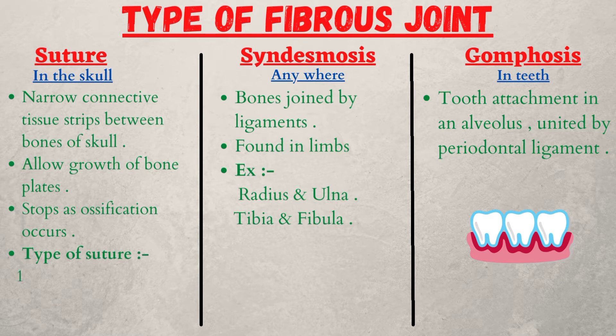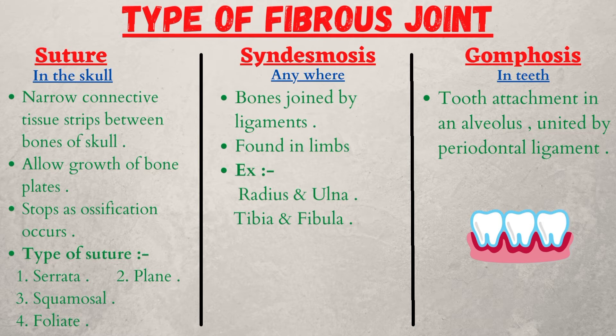Types of suture: one, serrata; two, plane; three, squimosal; four, foliate. Syndesmosis is found anywhere — bones are joined by ligaments. Found in limbs, example: radius and ulna, tibia and fibula. Gomphosis is found in the teeth — it is the tooth attachment in an alveolus, united by the periodontal ligament.